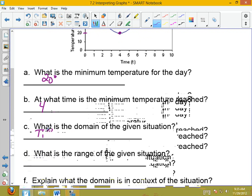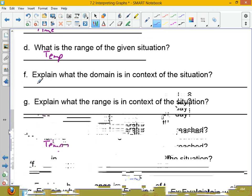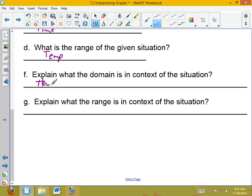What's the domain? Time. What's the range? Temperature. Well, what does the domain tell you? This could be a lot of different things. I'm going to put how the temperature fluctuates over time. What's the range? Well, same thing.